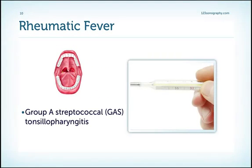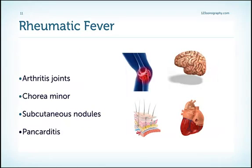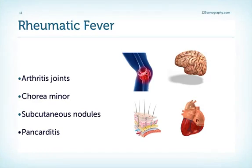Let's briefly review what rheumatic fever actually is. Rheumatic fever is caused by group A streptococcal bacteria and usually causes tonsillopharyngitis. It not only involves the heart but also the joints, where it causes arthritis, and the brain, where it leads to chorea minor. It forms subcutaneous nodules and can involve all three layers of the heart: the endocardium, the pericardium, and the myocardium. Rheumatic fever is an antigenic reaction to group A streptococcal pyrogens, leading to a cascade of inflammatory processes and the formation of so-called Aschoff bodies, ultimately resulting in tissue destruction and necrosis.